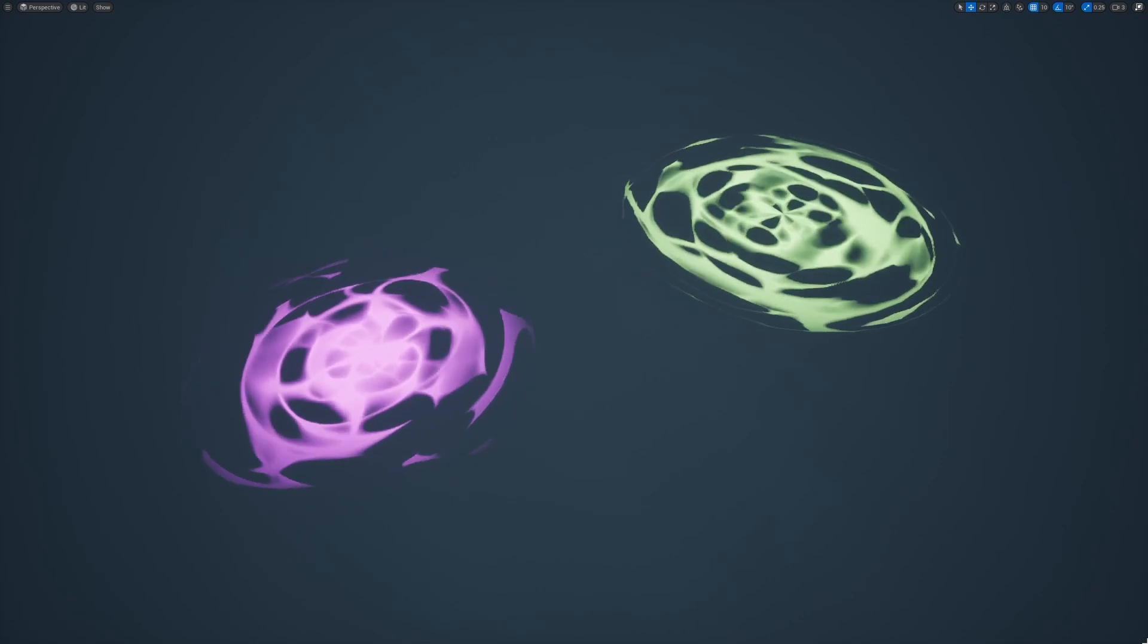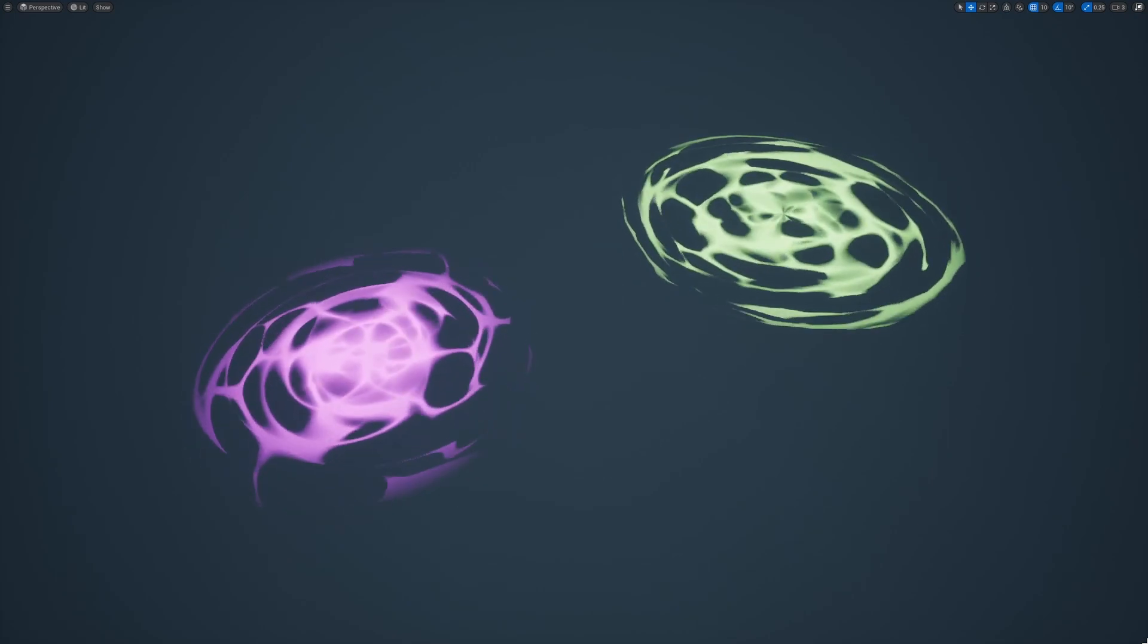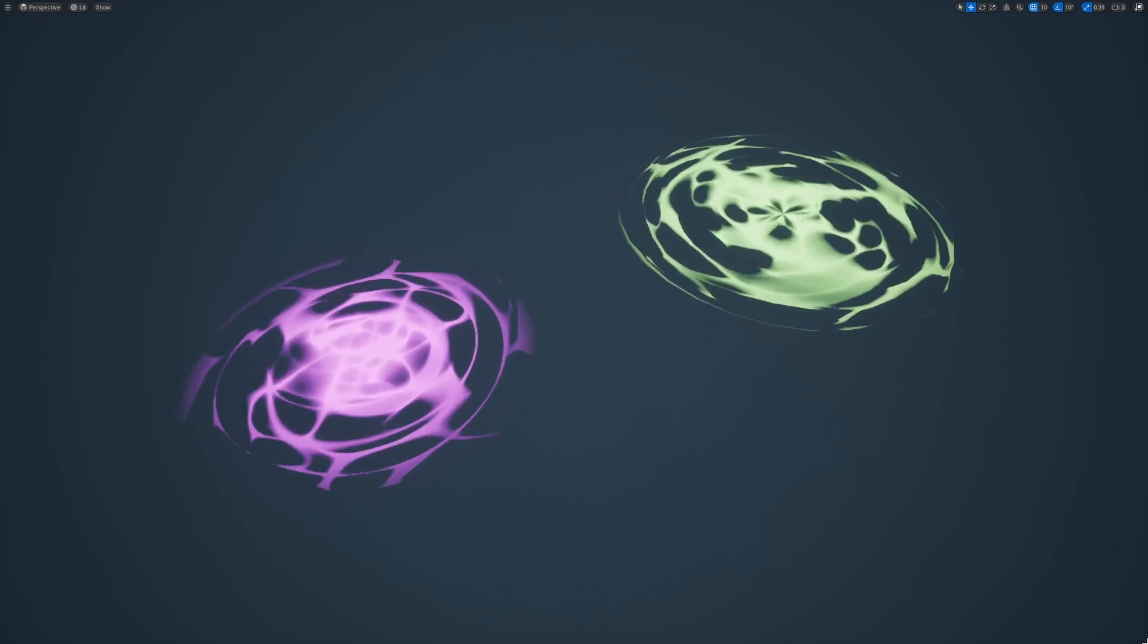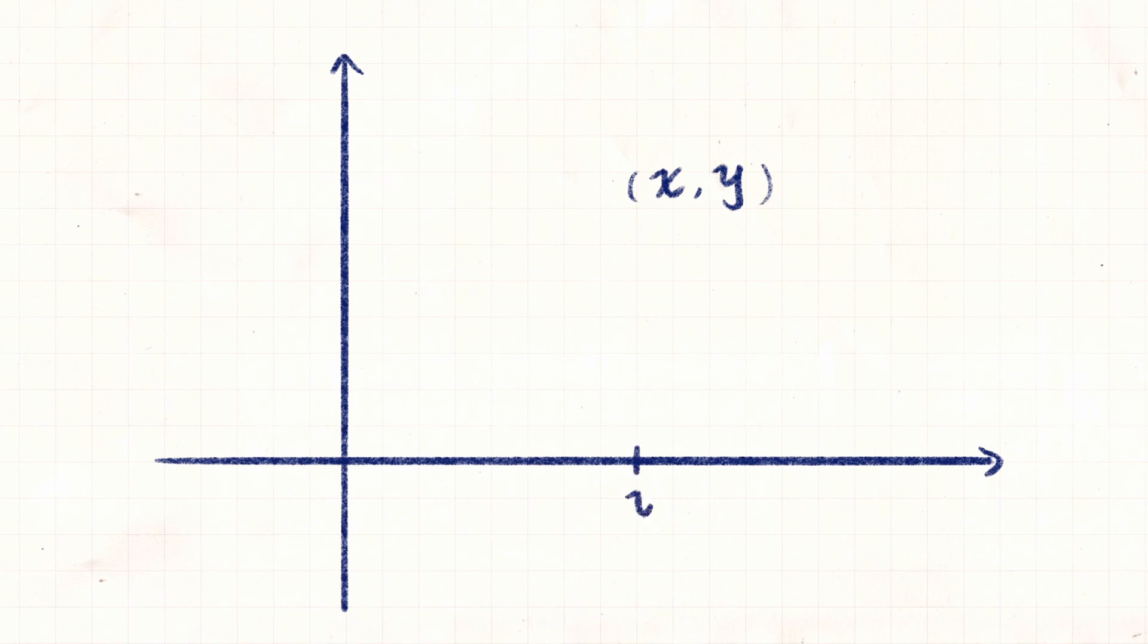So, before talking about polar coordinates, let's talk about the normal coordinates we're familiar with, Cartesian coordinates. So a location, x, y, in Cartesian coordinates means we find x on the x-axis and y on the y-axis and the intersection is the location x, y.